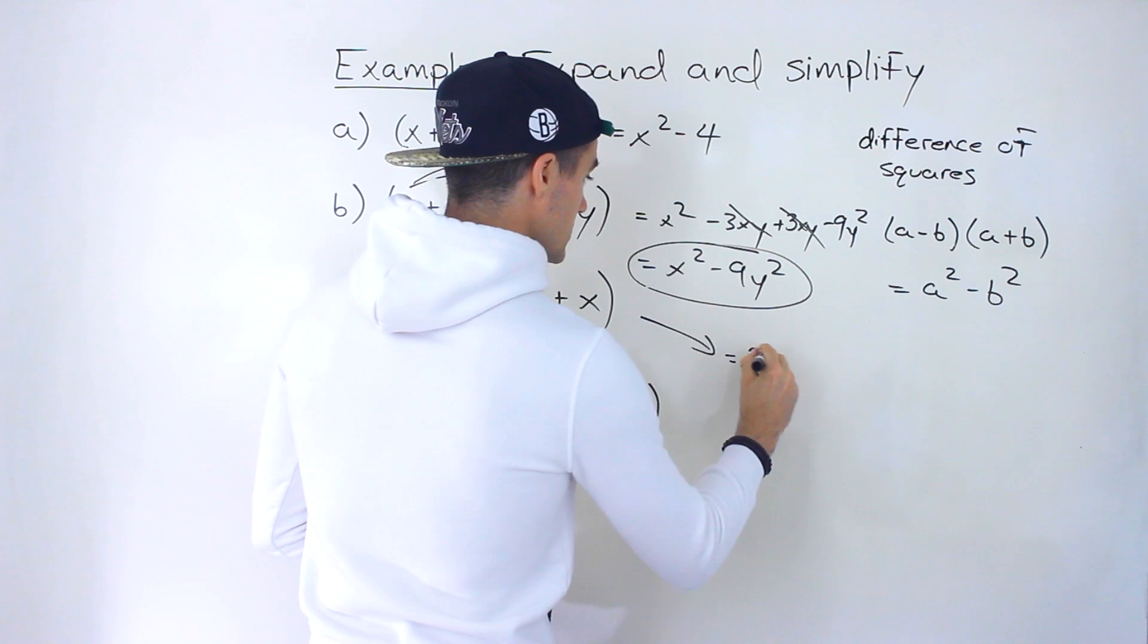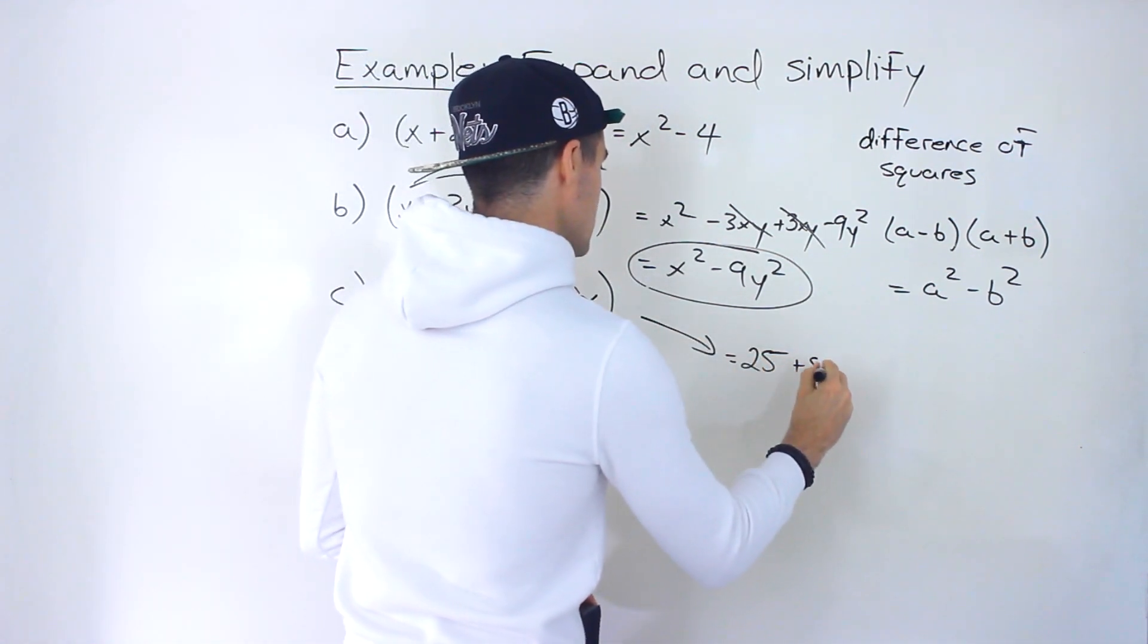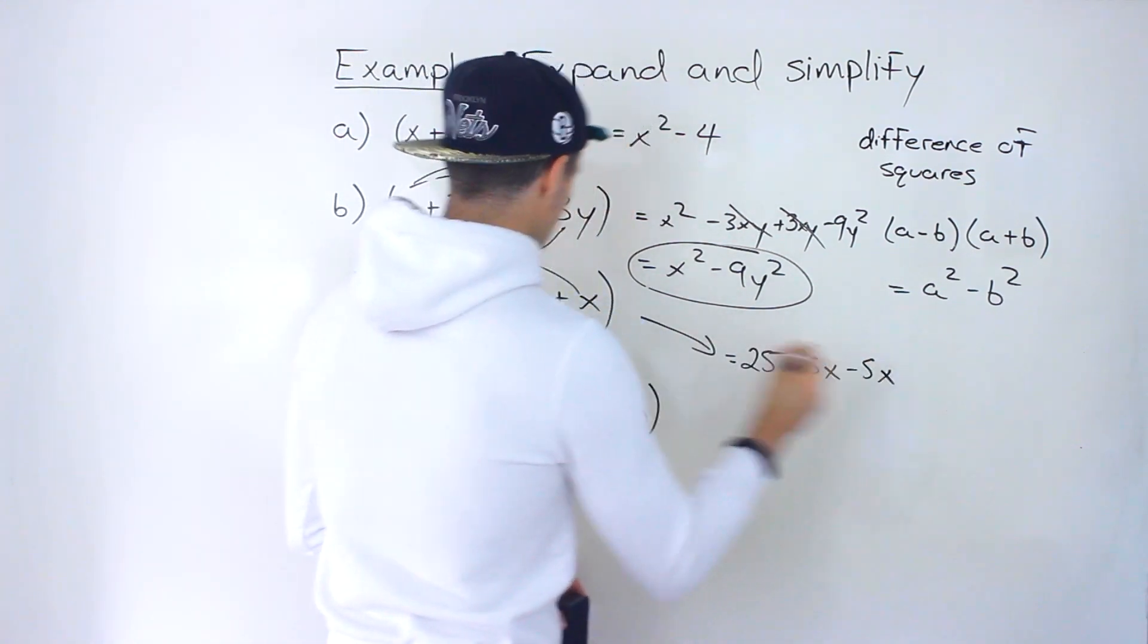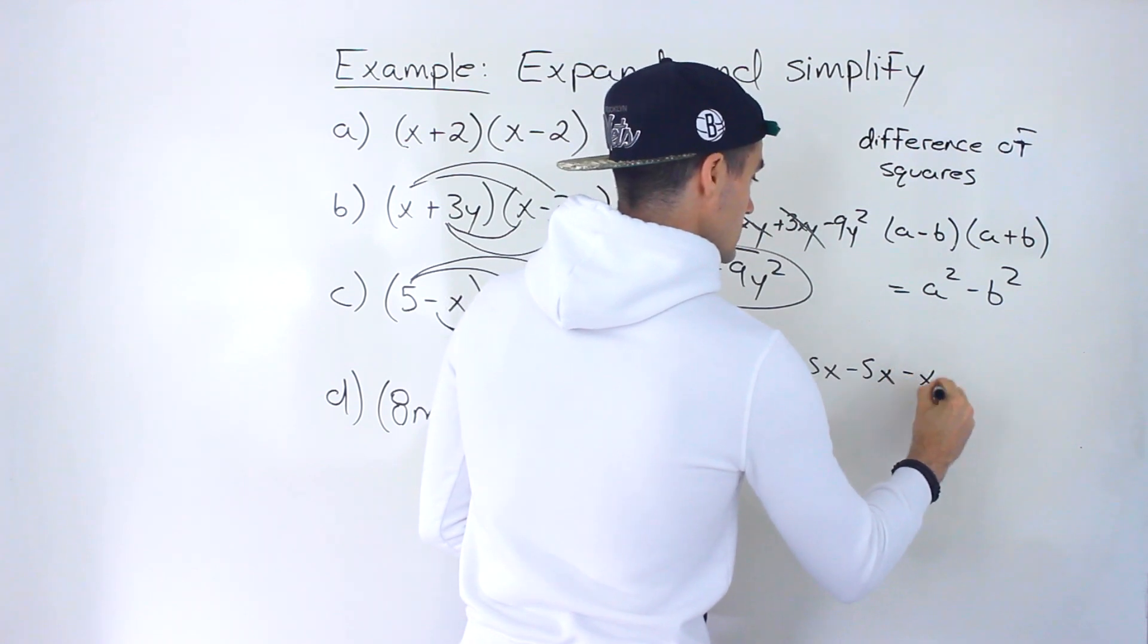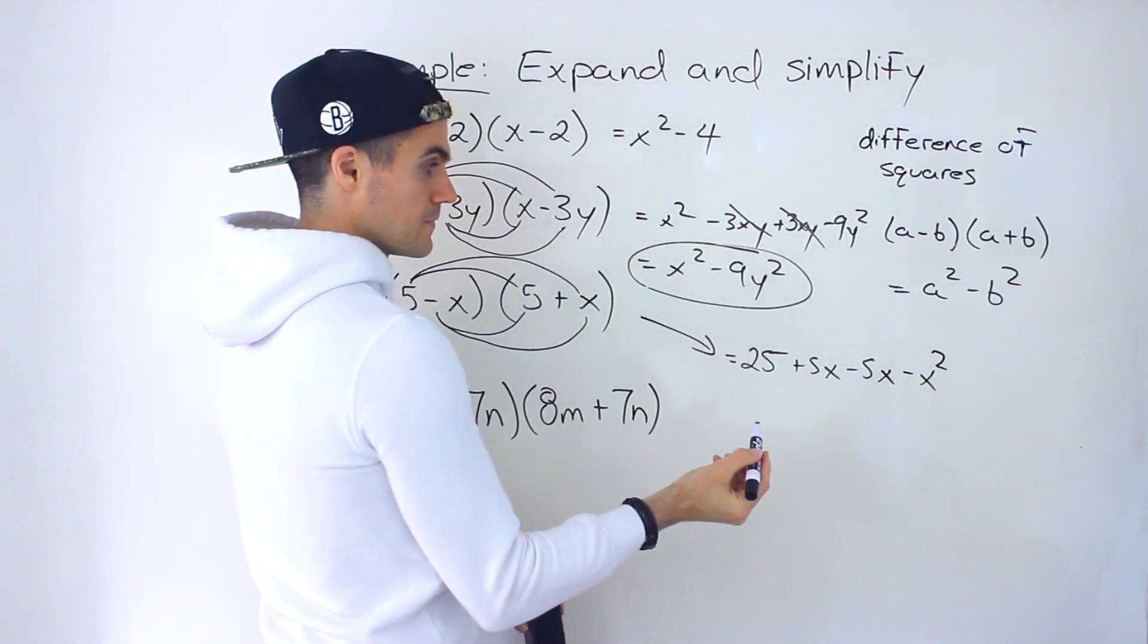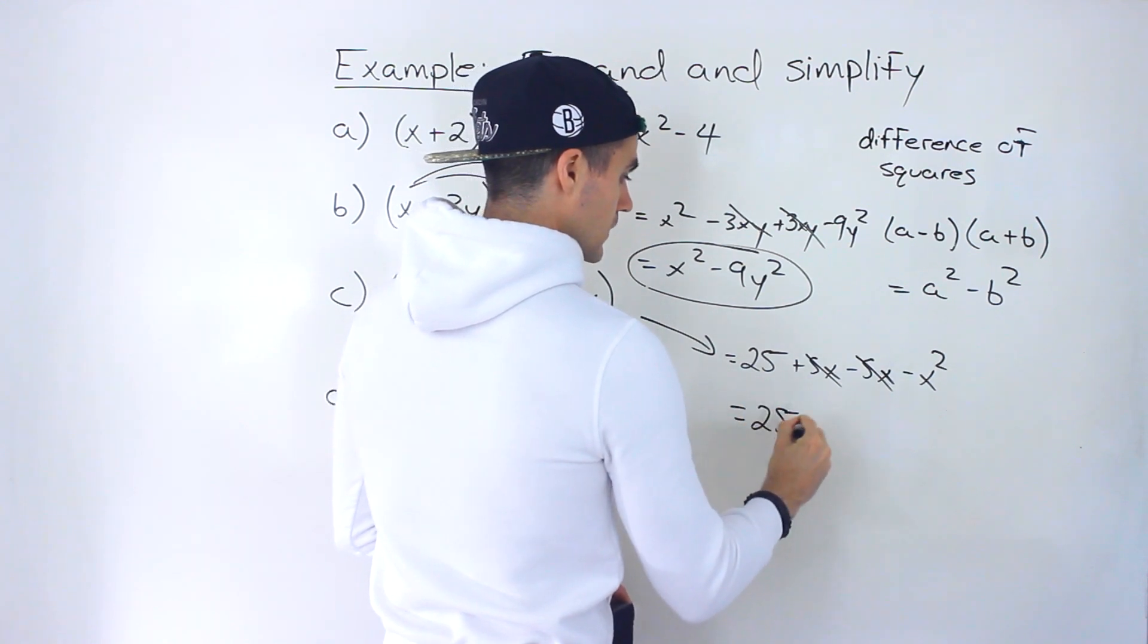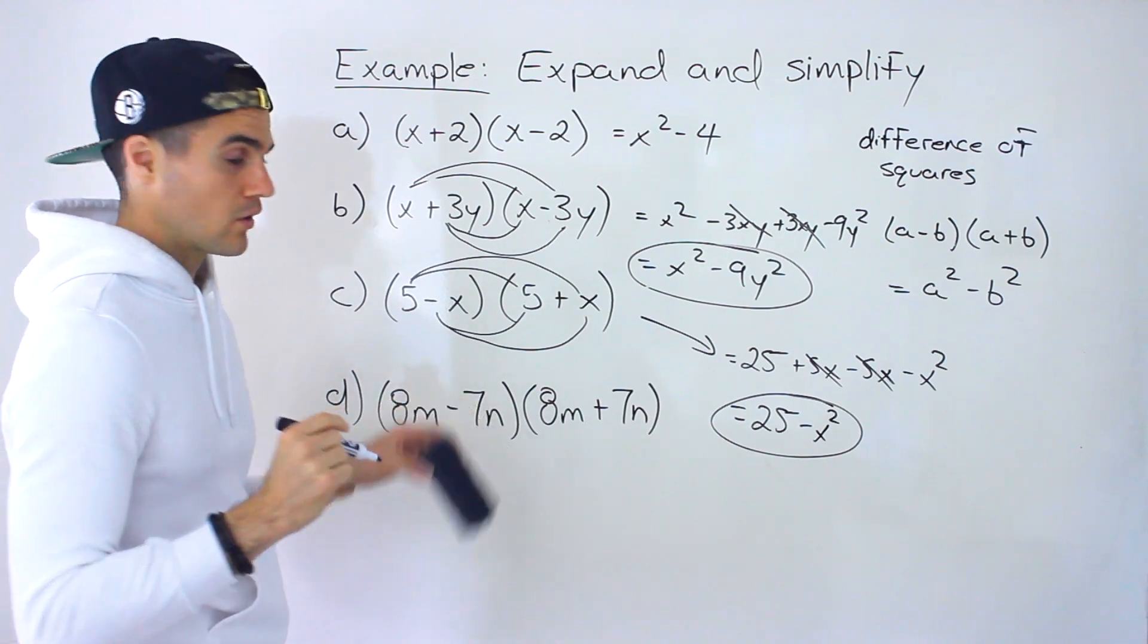5 times positive x, which gives us 5x. Negative x times 5 gives us minus 5x. And then negative x times positive x would give you minus x squared like that. These here cancel out. You end up with 25 minus x squared for part c.